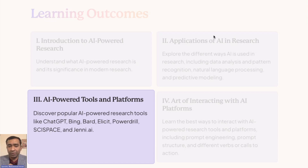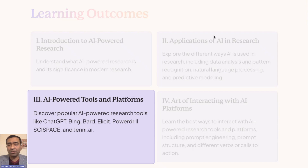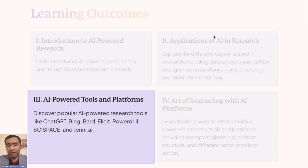We'll be using ChatGPT, Bing, and Bard, but at the same time for researchers there are some specific AI-based tools which are very powerful — for example, Elicit, PowerDrill, SciSpace, and Jenny.ai. These are amazing tools and you'll see the results will encourage you to do more research. Research is becoming easy now; the only thing AI needs your assistance with is developing the idea.